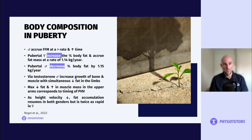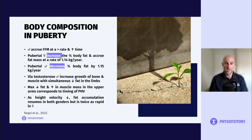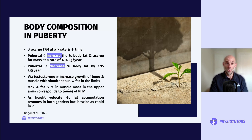Via testosterone, boys tend to increase bone and muscle growth with a simultaneous decrease in fat in the limbs. The maximal decrease in fat and increase in muscle mass in the upper arms corresponds to the timing of peak height velocity. As height velocity reduces, fat accumulation resumes in both genders, but it's twice as rapid in girls versus boys — something to consider when thinking about how growth phase impacts movement, rehabilitation, and return-to-play timeframes.